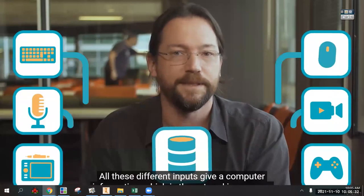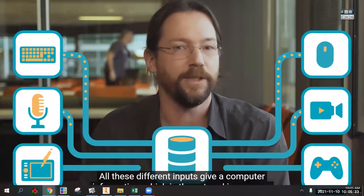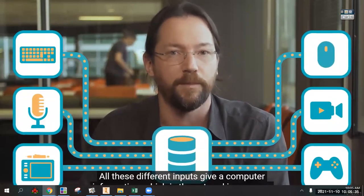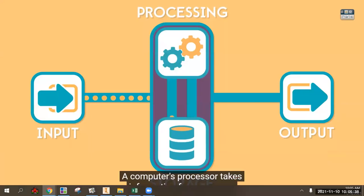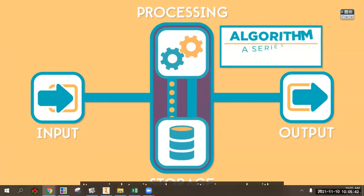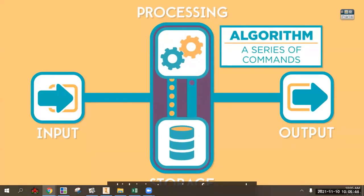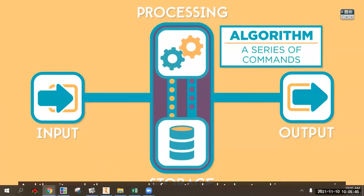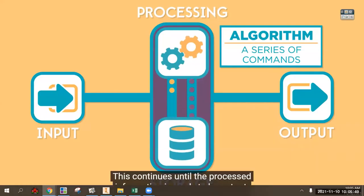All these different inputs give a computer information which is then stored in memory. A computer's processor takes information from memory, manipulates it using an algorithm - which is just a series of commands - then sends the processed information back to memory. This continues until the processed information is ready to be output.